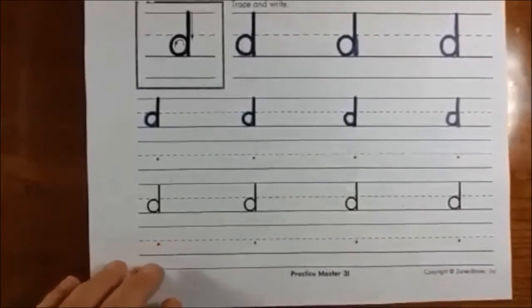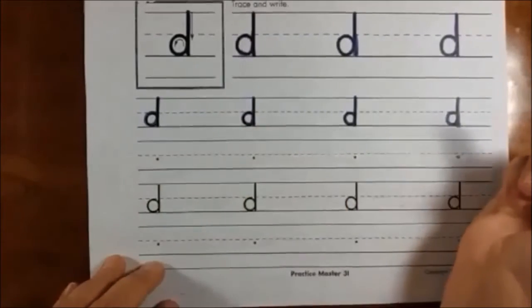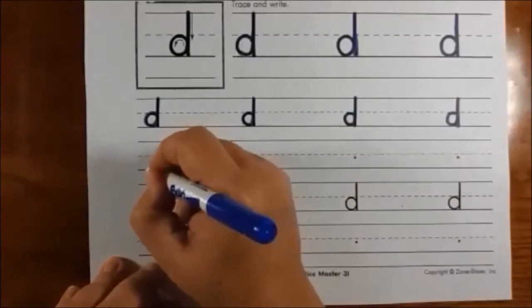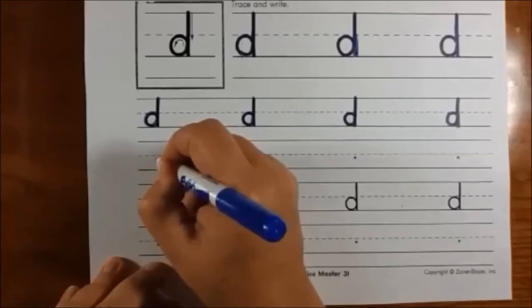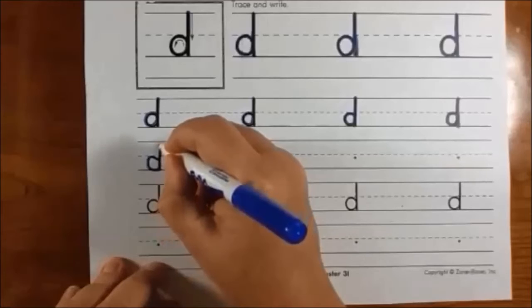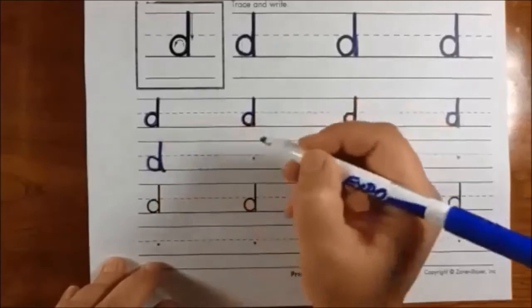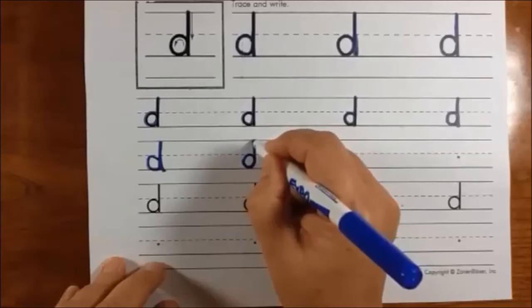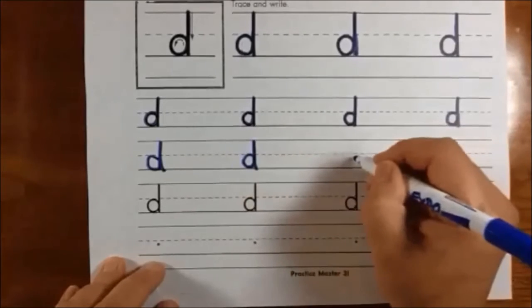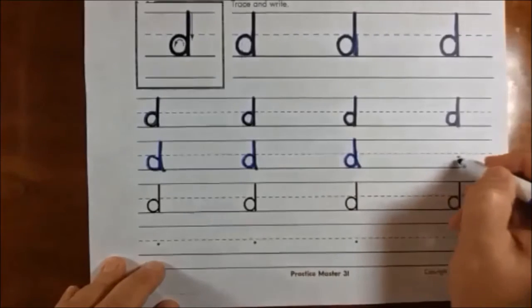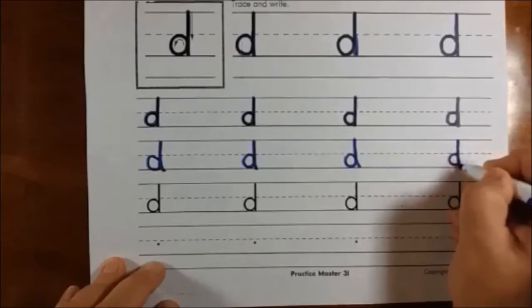Let's try making some on our own. You see they have their starting dot under the midline, so it's a small curve. Over, around, there's your C again, up, down. Over, around, up, down. Over, around, up, down. Over, around, up, down.